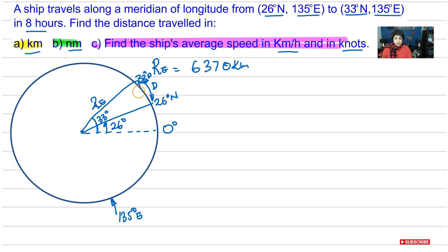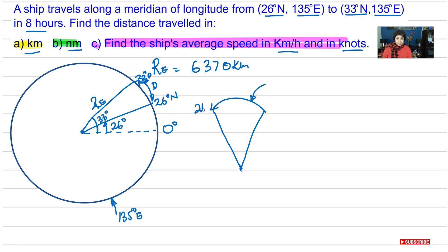We are looking for the distance from this latitude to the other latitude — that is what we are looking for. If I sketch that over here, you will see the centre of our Earth and this is part of our great circle, which is 135 degrees east. We are travelling from 26 degrees to 33 degrees north. The angular difference from where I start my journey to where I finish is 33 take away 26 degrees, which is 7 degrees. All you have now is just a sector.